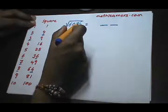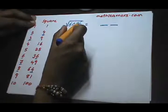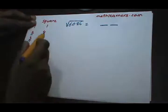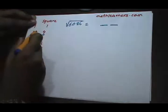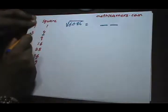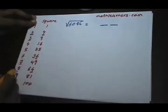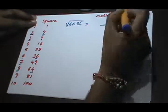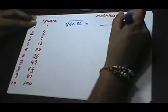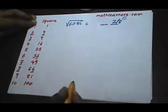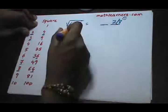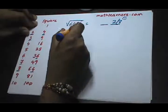This number is ending with 4, so the square root will end with either 2 or 8. Finding the last digit is our first step.